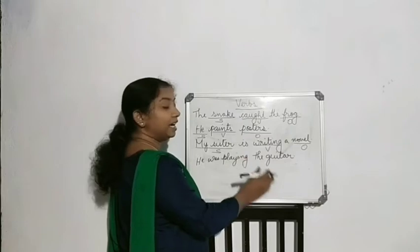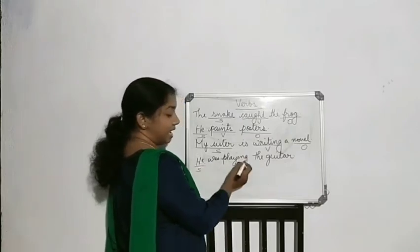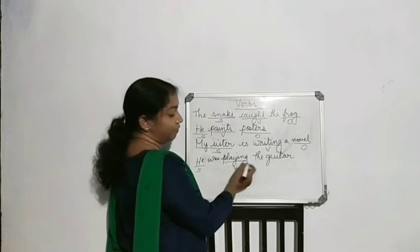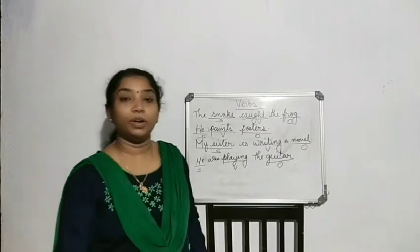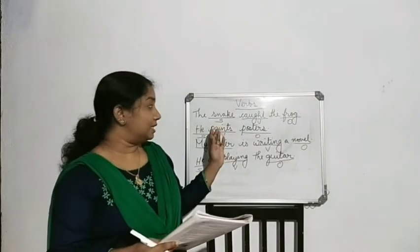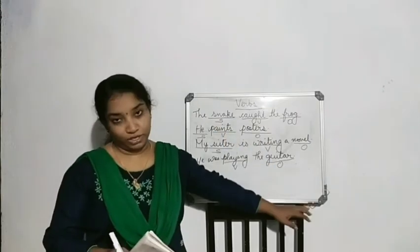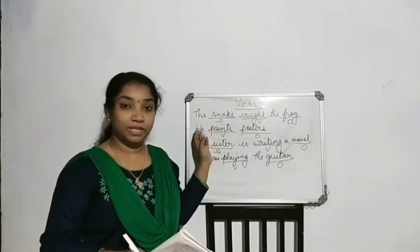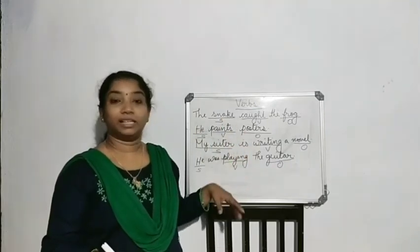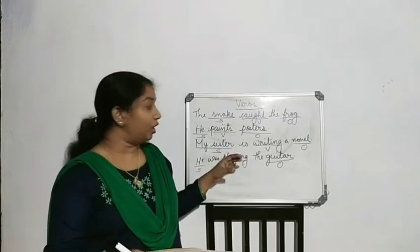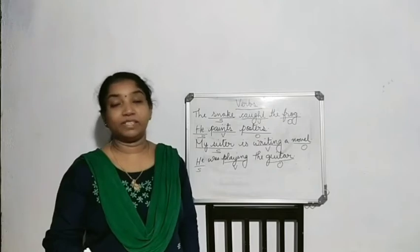Next: 'He was playing the guitar.' He is the subject, playing is the verb, and guitar is the object. So the sentence has three parts: subject, verb, object. Subject means who performs the action; verb means the action; and object means who receives the action.